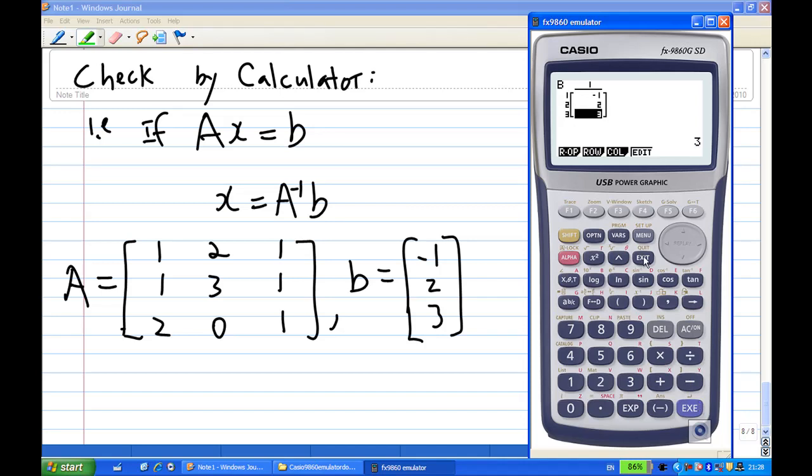After you finish, press exit. Press exit again. I want to do some matrix multiplication: A inverse times b. So, I'm going to press option, do F2 for matrix, F1 matrix. Alpha A. This is matrix A inverse. I need to raise the power -1.